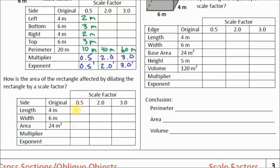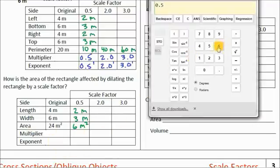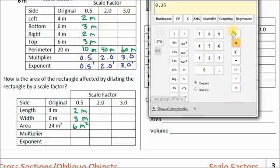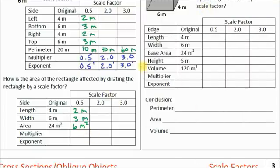When I apply a scale factor of 0.5: 4 times 0.5 is 2 meters for the length, and 6 times 0.5 is 3 meters for the width. We multiply length times width to get area, so our new area is 6 meters squared. What's our multiplier? We take the new area divided by the original area: 6 divided by 24 gives us 0.25. Our multiplier is 0.25.